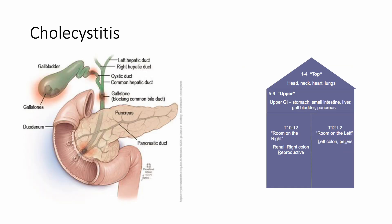Cholecystitis: someone presents with right upper quadrant pain, positive Murphy's sign — they hesitate when they inhale because of an irritated gallbladder with stones. Where is the tissue texture change going to be for sympathetic innervation? We think upper GI — the gallbladder is attached to the liver, near the pancreas. So T5 through T9. Answer options might be T2, T7, T10, and L2 — you pick whichever one falls in that House of Golden category.